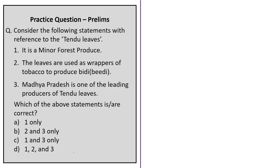The next question is related to Tendu leaves. Three statements have been given. The first statement says Tendu leaf is a minor forest produce — correct, as per Section 2(i) of the Scheduled Tribes and Other Traditional Forest Dwellers' Recognition of Forest Rights Act of 2006. The second statement says the leaves are used as wrappers of tobacco to produce Bidi — correct. The third statement says Madhya Pradesh is one of the leading producers of Tendu leaves — correct, as Madhya Pradesh accounts for nearly 25% of total production. The correct answer is option D: all three statements 1, 2, and 3.